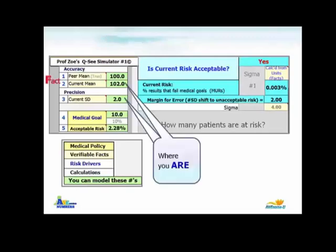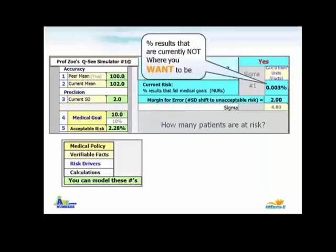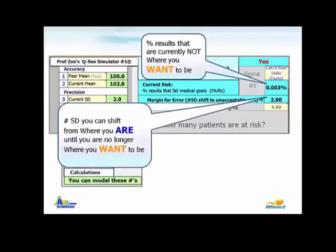What we're using is a process that says: where you are — the measured values of the current mean and the current SD based on fact — compared to where you want to be — the measured peer mean and the medical opinion of the medical goal and acceptable risk level. With those numbers, you can mathematically calculate the percent of results that are currently not where you want to be. You can calculate the number of SDs that you can shift from where you are now until you're no longer where you want to be.